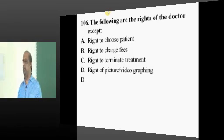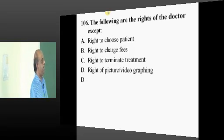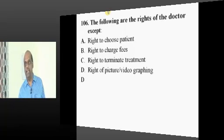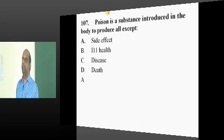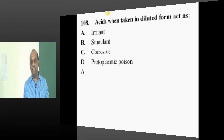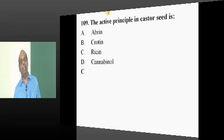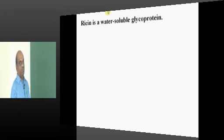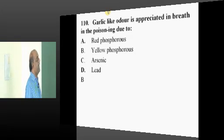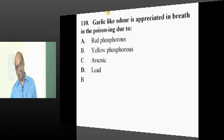The remaining questions are very cheap questions. What is the right of a doctor? He can choose a patient, right to charge fees, terminate treatment, but not videograph the patient without consent. With consent, yeah, you can. Poison is a substance that leads to disease, death, and ill health. Basic definitions of forensic. 240 questions means somehow we have to finish the story. Acids act like an irritant. Castor seed - what does it contain? It contains ricin which is a water-soluble glycoprotein. Garlic odor - low phosphorus? Arsenic also. Probably we need to change the option, agreed.